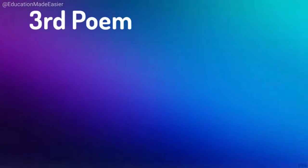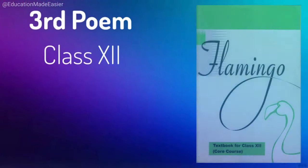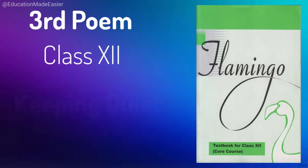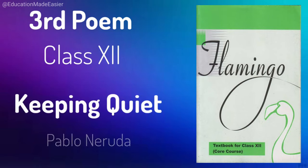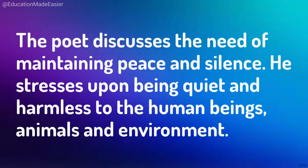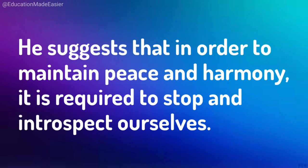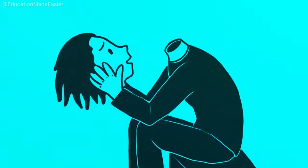Today I am here with the third poem of class 12th from the Flamingo book. The title is 'Keeping Quiet' and the poet is Pablo Neruda. In this poem, Pablo Neruda discusses the need for maintaining peace and silence, stressing upon being quiet and harmless to human beings, animals, and the environment. He also suggests that to maintain peace and harmony, it is required to stop and introspect ourselves.